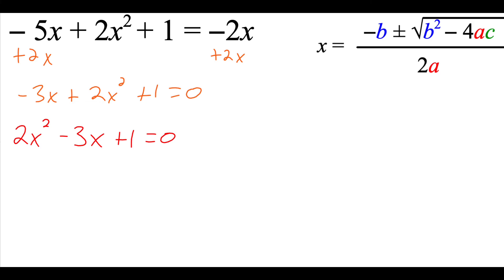Now let's go through and identify our a, b, and c values. So a is the number in front of the x squared, so that's 2. B is the number in front of the plain x, so that's negative 3. And c is the number on the end with no variable attached to it at all, so that's 1. Now I'm going to take those values and plug them in where they need to go in my quadratic formula.